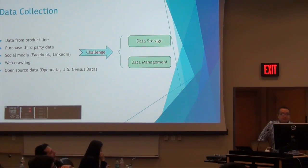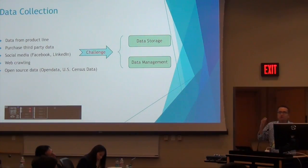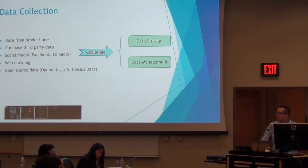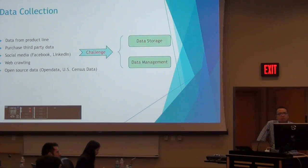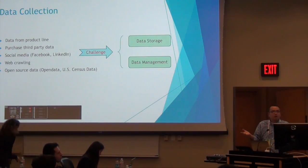After we have the business requirements, the next step is to find the data. Where is the data we can use? Many companies already have a production system — for instance, Amazon has millions of orders, and at Synopsys we have a lot of data from our clients. But we can also find data from other parties. You can purchase third-party data. When working on the healthcare project, we purchased data from hospitals. You can also use social networks like Facebook and LinkedIn, build a web crawler to download data, or use open source data. OpenData.org — you can find a lot of data there.